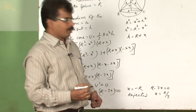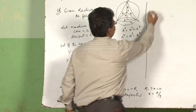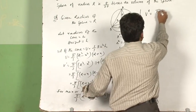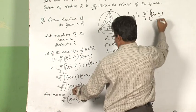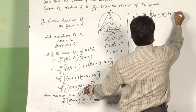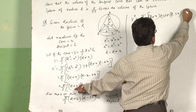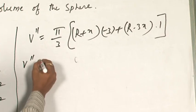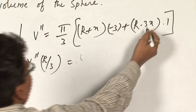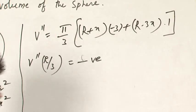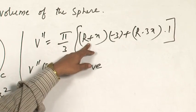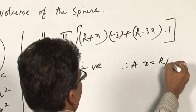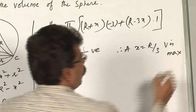Now let us check V double dash. V dash is pi by 3 times (R plus x)(R minus 3x), so V double dash equals pi by 3 times [(R plus x) times (minus 3) plus (R minus 3x) times 1]. We do not need further simplification; we just substitute. At the critical point x equals R by 3: the second term becomes 0, and the remaining term is negative. Substituting x equals R by 3 gives a positive times negative result, so overall V double dash is negative. Therefore, at x equals capital R by 3, V is maximum — the volume of the cone is maximum.